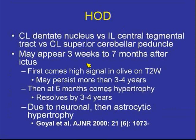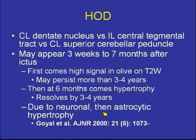The first thing you see is high signal intensity in the medullary olive on T2-weighted scan. Then, after about six months, you see hypertrophy of the medullary olive. This is due to neuronal hypertrophy and then later astrocytic hypertrophy.